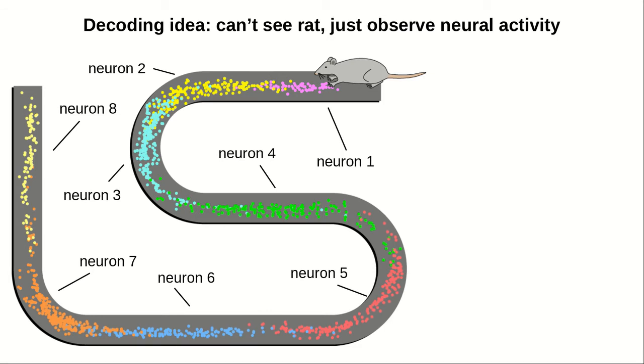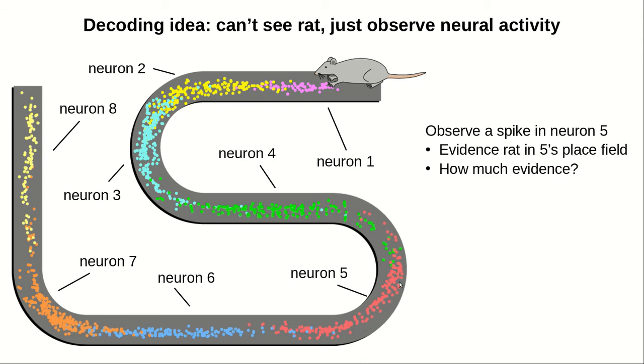While you are listening for neural activity, you detect a spike in neuron 5. Does that help you know where the rat is? It would seem neuron 5's spike should be evidence that the rat may be in neuron 5's place field. The spike suggests that the rat might be somewhere over here. But how much evidence does that single spike observation give? How confident can we be that the rat is in neuron 5's place field? Think about what factors might make you more or less confident.